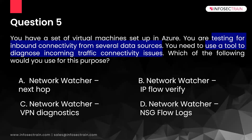Option A — Next Hop — helps determine whether traffic is being directed to the intended destination by showing the next hop device. It does not help verify whether inbound connectivity is working. Option C — VPN Diagnostics — helps troubleshoot gateway and connection issues, providing summary and detailed information about VPN issues, useful for troubleshooting gateway or connections.